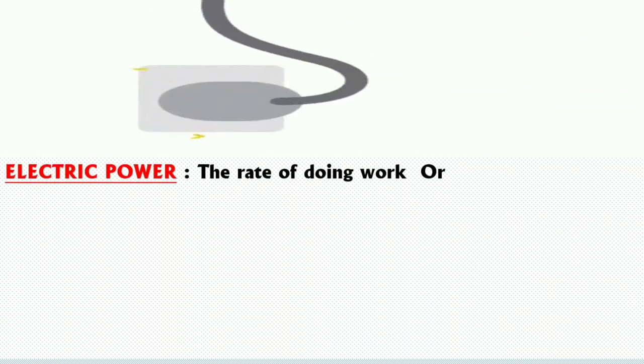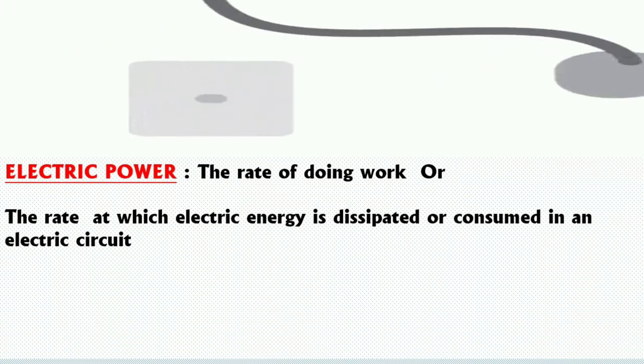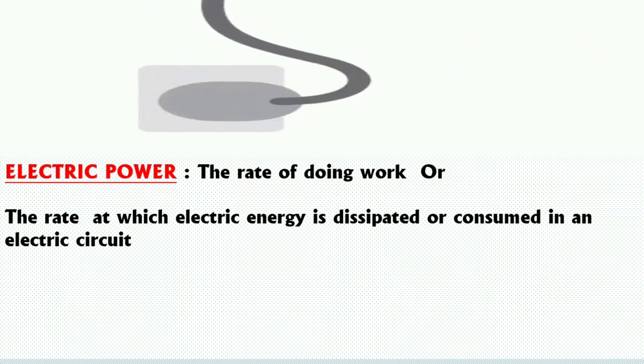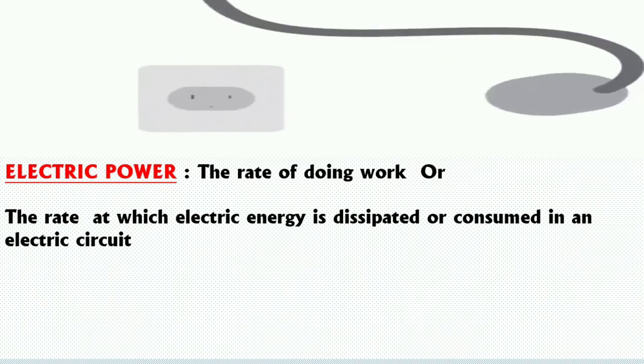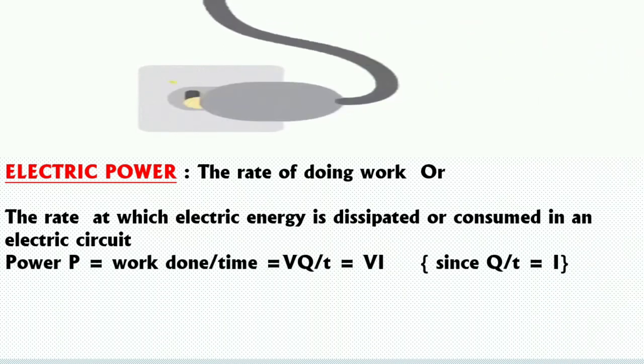Now let's discuss what is electric power. Electric power is the rate of doing work or the rate at which electric energy is dissipated or consumed in an electric circuit. Mathematically, electric power is equal to work done upon time.